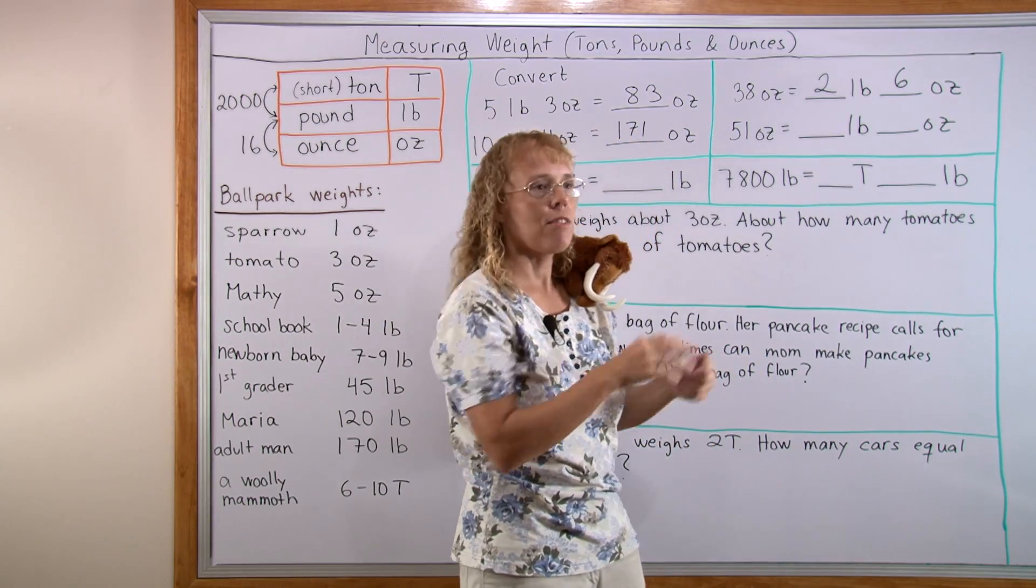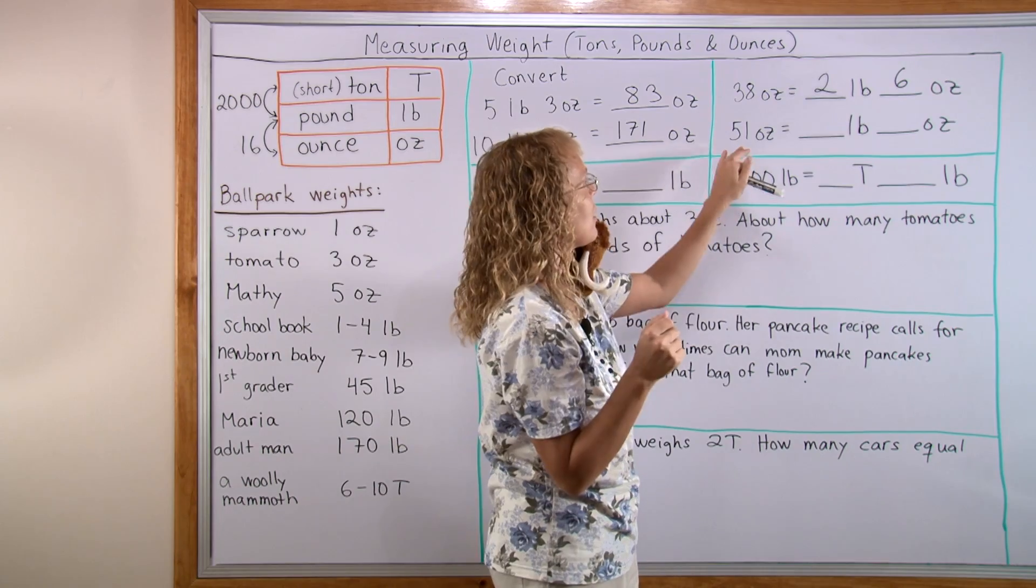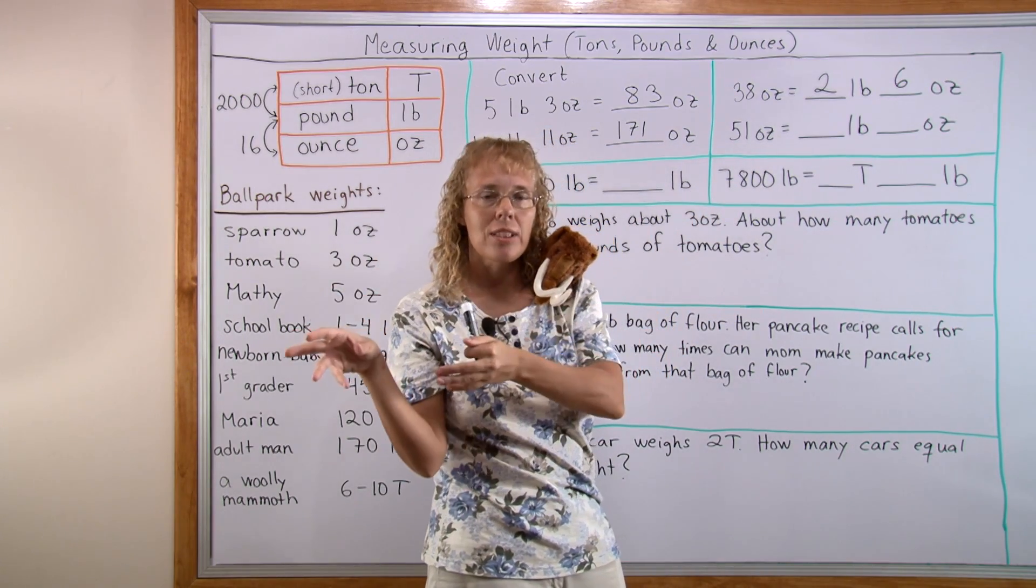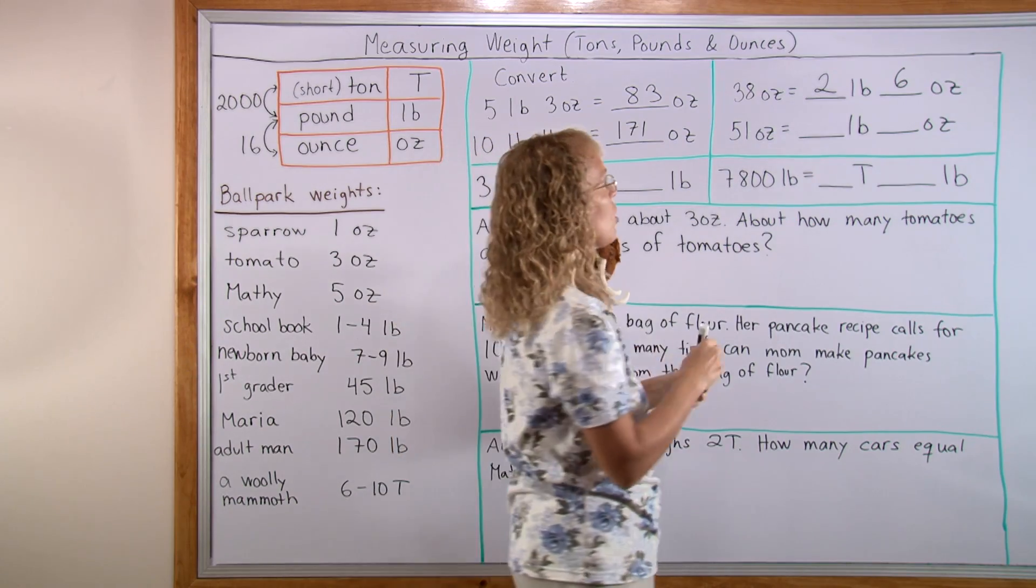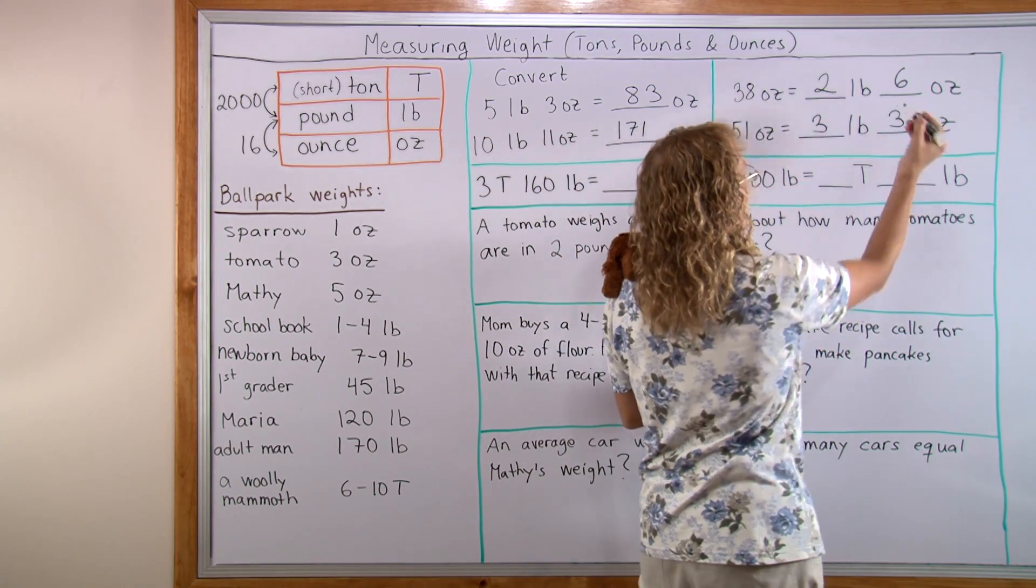Again, 51 ounces. Think of 16, 16, 16. How many 16s can you get into 51? 16 and 16 is 32, one more 16 is 48. So 3 pounds makes 48 ounces with 3 ounces left over.